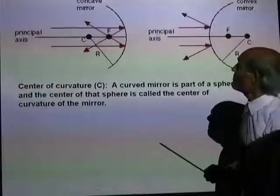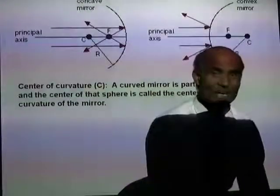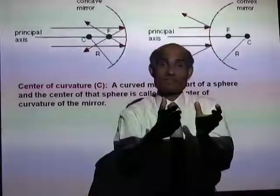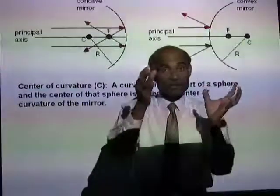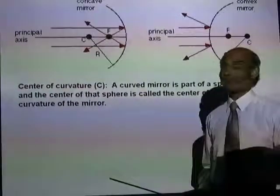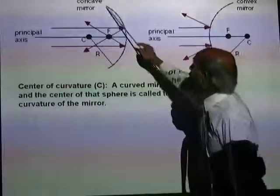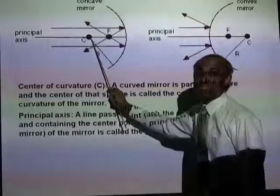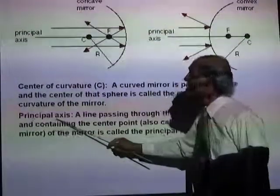Let's talk about some important features of curved mirrors. The center of curvature — if you take a curved mirror, it can be considered part of a sphere, like cutting part of a basketball. The center of such a sphere is called the center of curvature of the mirror. If you draw a line passing through the center of curvature and touching the mirror at its geometric center, that axis is called the principal axis.